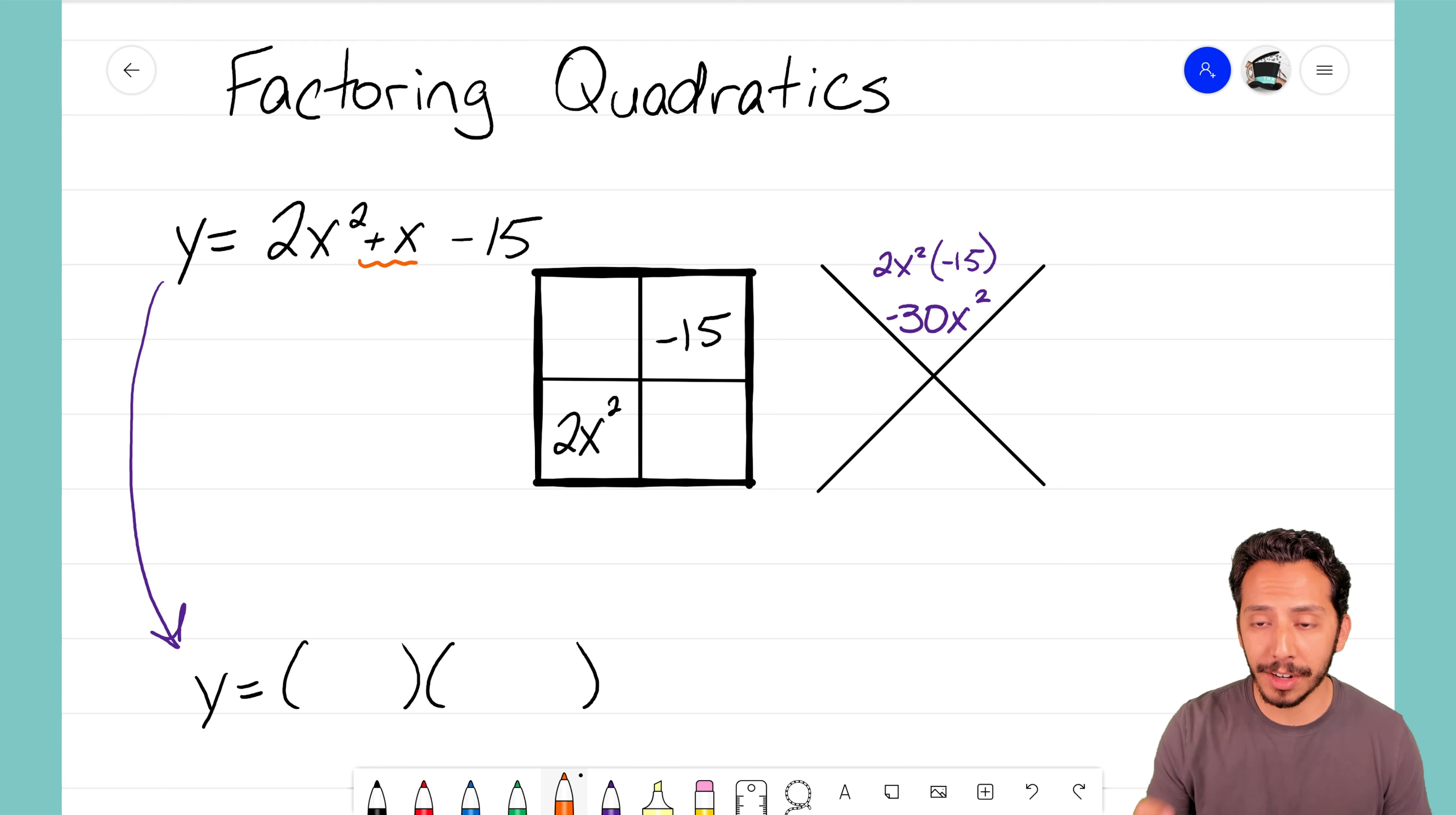That means we have one x there and we need to come up with two numbers here that will go in the empty spaces of our generic rectangle that when added are going to create 1x. But those two numbers also have to multiply and create negative 30x squared. So now's the part where we have to think about some factors of negative 30 that are going to multiply and create negative 30 but also add to 1x.